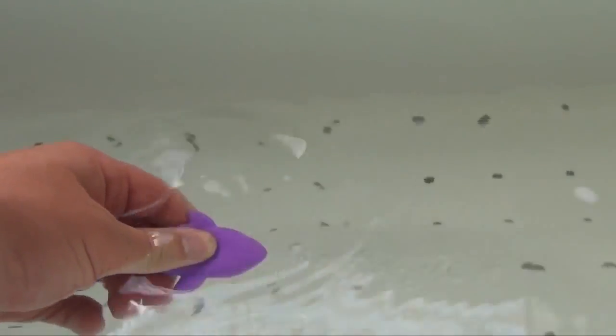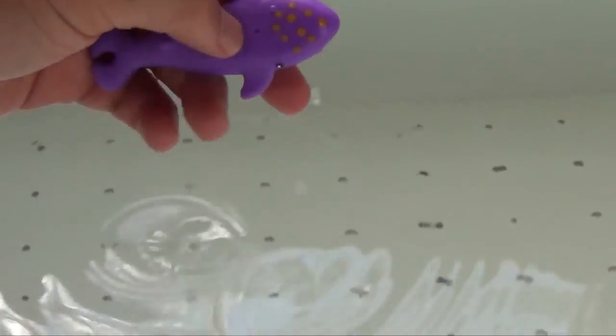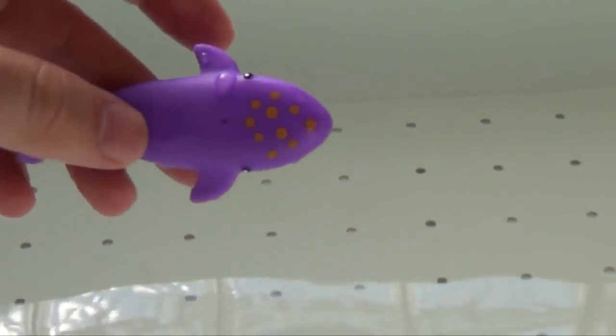So you put him under, and he can fill up, and there are his spots. Now when you let him out, those will go away, or you can probably put him under cold water and have them go away a little quicker.